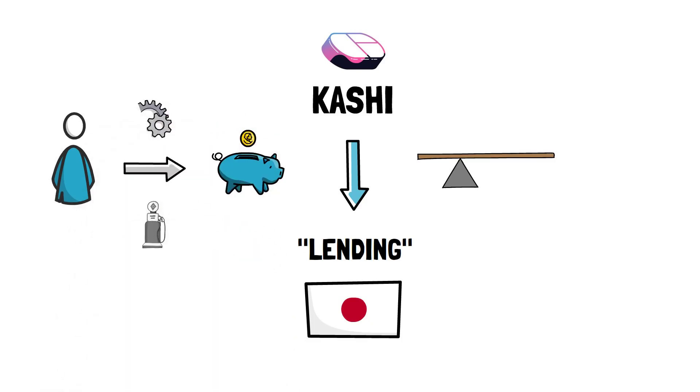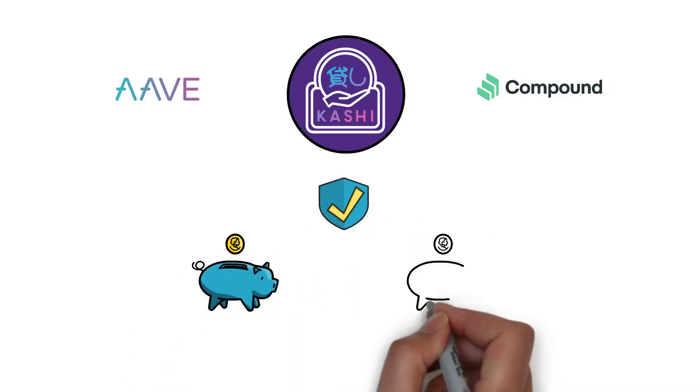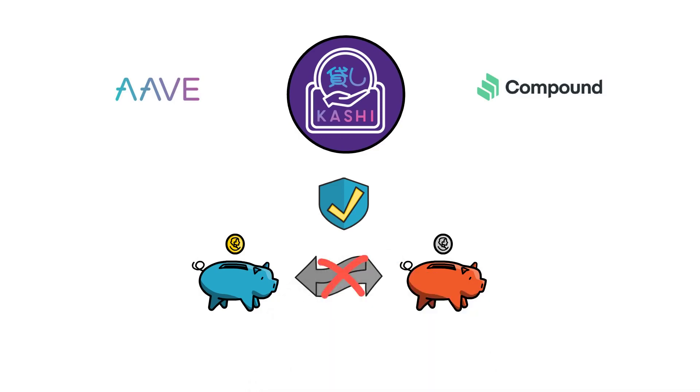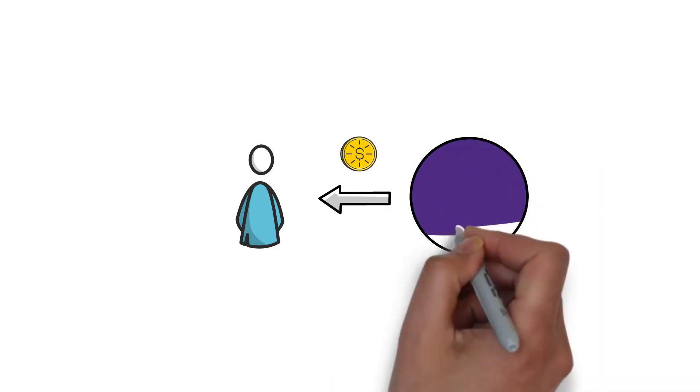In contrast to other popular DeFi money markets, such as Aave or Compound, Kashi isolates each of the markets. This means that users can create markets for more risky assets without having an impact on other markets.